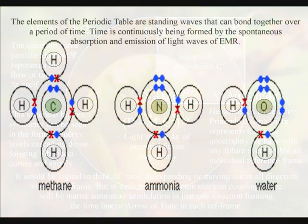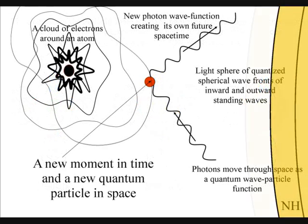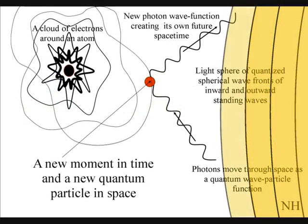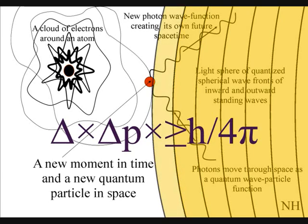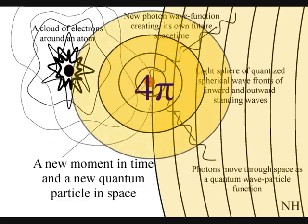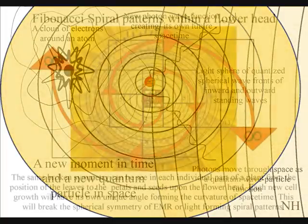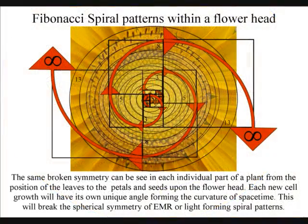In this theory, the elements of the periodic table are standing waves over a period of time. Time is continuously being formed by the spontaneous absorption and emission of light waves of electromagnetic radiation. This forms a universal process of spherical symmetry forming and breaking.